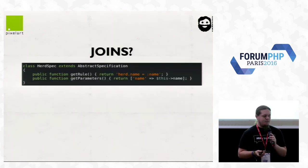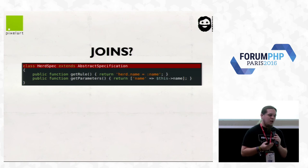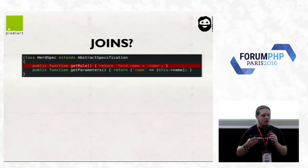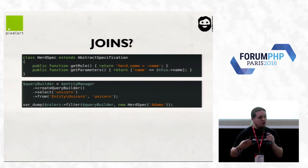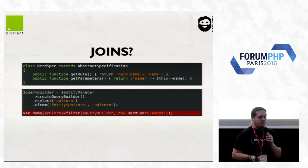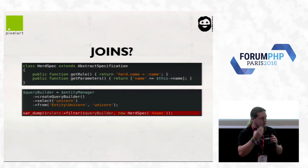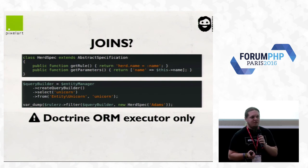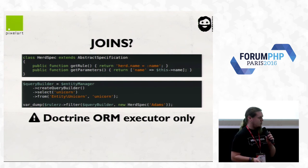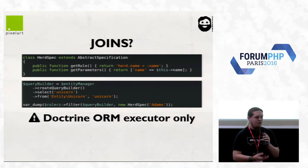Another cool feature is joins. A herd specification has a rule filtering against the name of the herd from the unicorn — herd.name. The herd is a property of the unicorn and the herd has a name property. So you filter all unicorns in the herd named 'atoms', for example. Joins are only auto-detected on the Doctrine ORM executor — not on Eloquent. Most cases this project is used in Doctrine projects, which is why automatic join detection is for Doctrine.